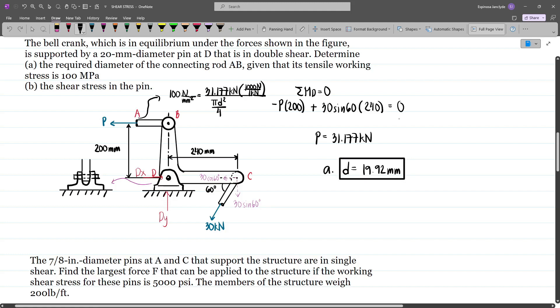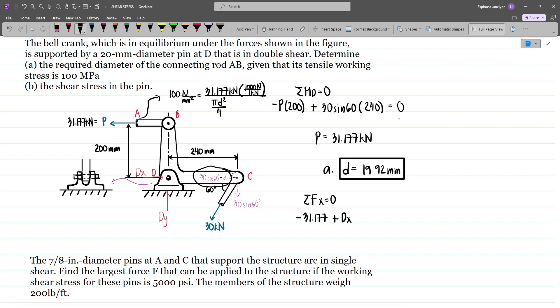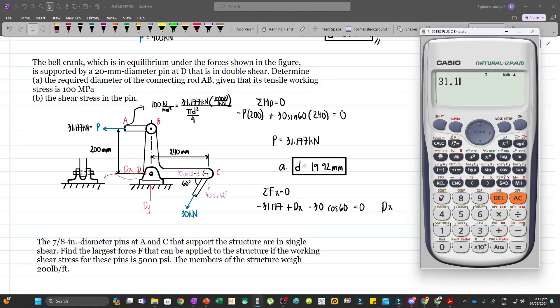For letter B, we need to find dx and dy. To solve dx, we sum forces horizontally. We have 31.177 going left (that's minus), then dx assumed going right (that's plus), and then minus 30 cos 60, which is the horizontal component of the 30kN load. This equals zero. So dx equals 31.177 plus 30 cos 60, which gives us 46.177 kN.